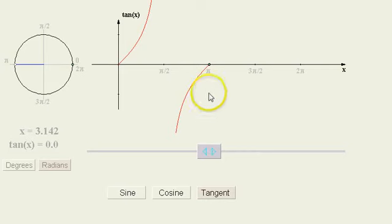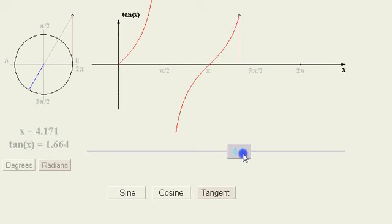Notice we had negative values for slope in quadrant 2, and now we're going to have positive values for slope in quadrant 3. Once again, as we approach 3 pi over 2, the slope becomes very, very steep and basically approaches infinity.